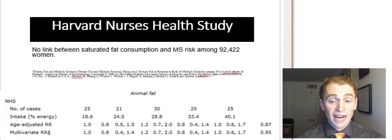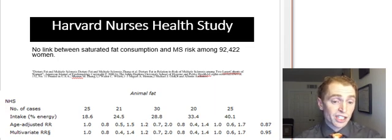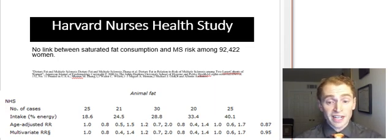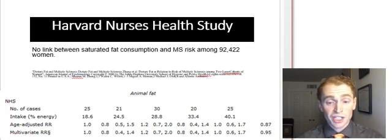There are other epidemiologic studies showing the same thing. For instance, a Danish Religious Society's Health Study looked at Seventh-day Adventists, who are often vegan or pescatarian. They have much lower risk of cardiovascular disease, but they have the exact same risk of MS.